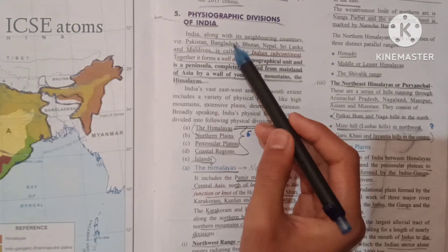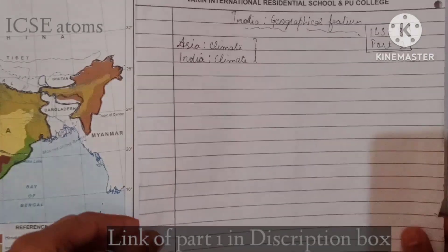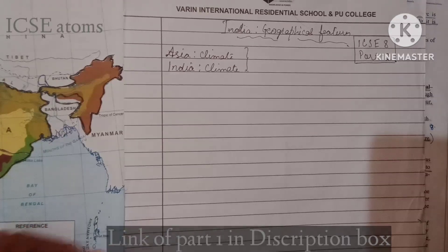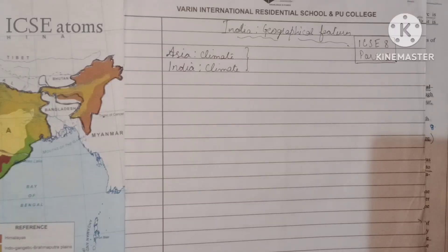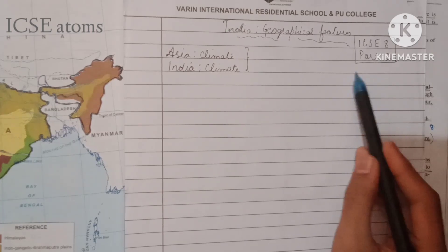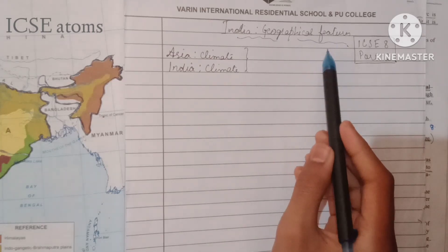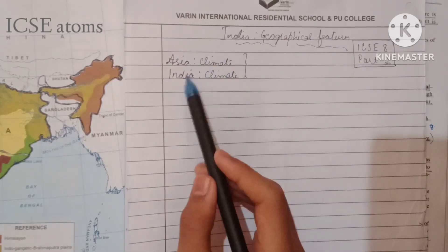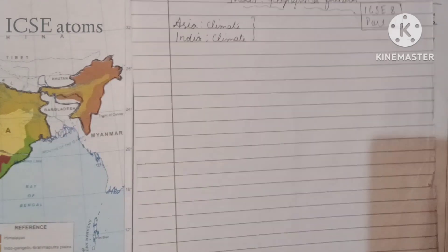We are going to start the second part of the chapter on India's geographical features. We have already discussed the first part, which dealt with location, extent, introduction, and the political division of India into states, union territories, and districts. We have also already uploaded chapters on Asia climate and India climate, so you can refer to the geography playlist.